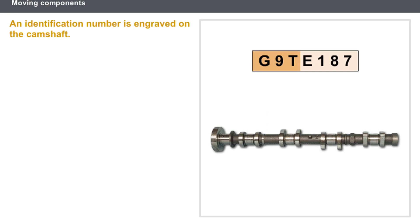An identification number is engraved on the camshaft. The first three characters indicate the engine type, the next character distinguishes the inlet camshaft (A) from the exhaust camshaft (E), and the last few characters are used by the manufacturer.